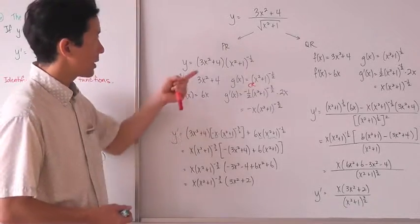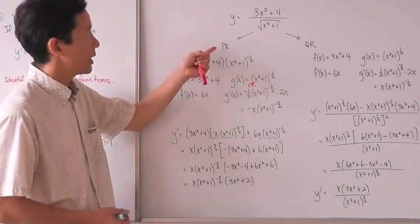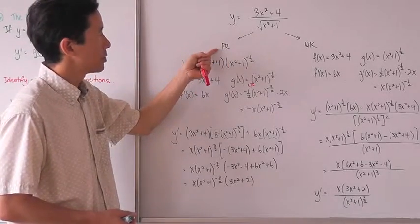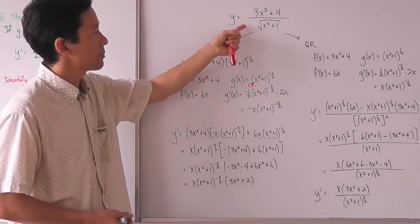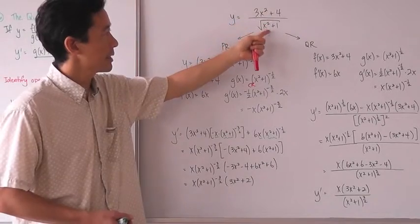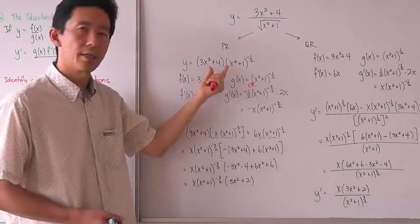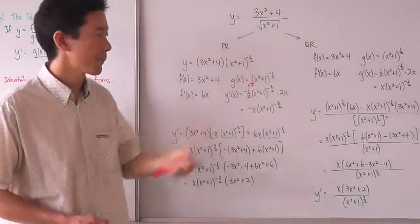That's how we can use the product rule on something that looks like a quotient, by first changing the form so that it is a product.